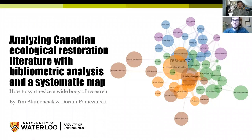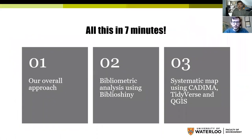Hi everyone, thank you for joining us for a brief presentation on a project that me and Tim have been working on for the past six or seven months — analyzing Canadian ecological restoration literature with bibliometric analysis and a systematic map. In this presentation we will first discuss our overall approach, followed by our use of BiblioShiny, a tool used for conducting bibliometric analyses, and then how we refined that data into a systematic mapping approach using programs such as Cadima, Tidyverse, and QGIS to extract meaningful information about trends in Canadian ecological restoration literature and identify opportunities for the future.